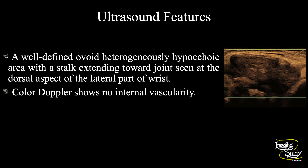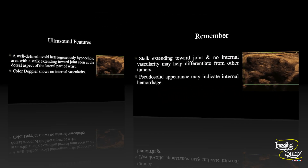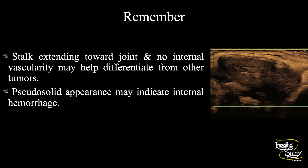In summary, a well-defined ovoid hypoechoic area with a stalk extending toward the joint is seen at the dorsal aspect of the lateral part of the wrist. The color Doppler shows no internal vascularity. These features conclude it as a case of ganglion cyst. The take-home message: a stalk extending toward the joint and no internal vascularity may help differentiate from other tumors. The pseudosolid appearance of the ganglion cyst may indicate internal hemorrhage.